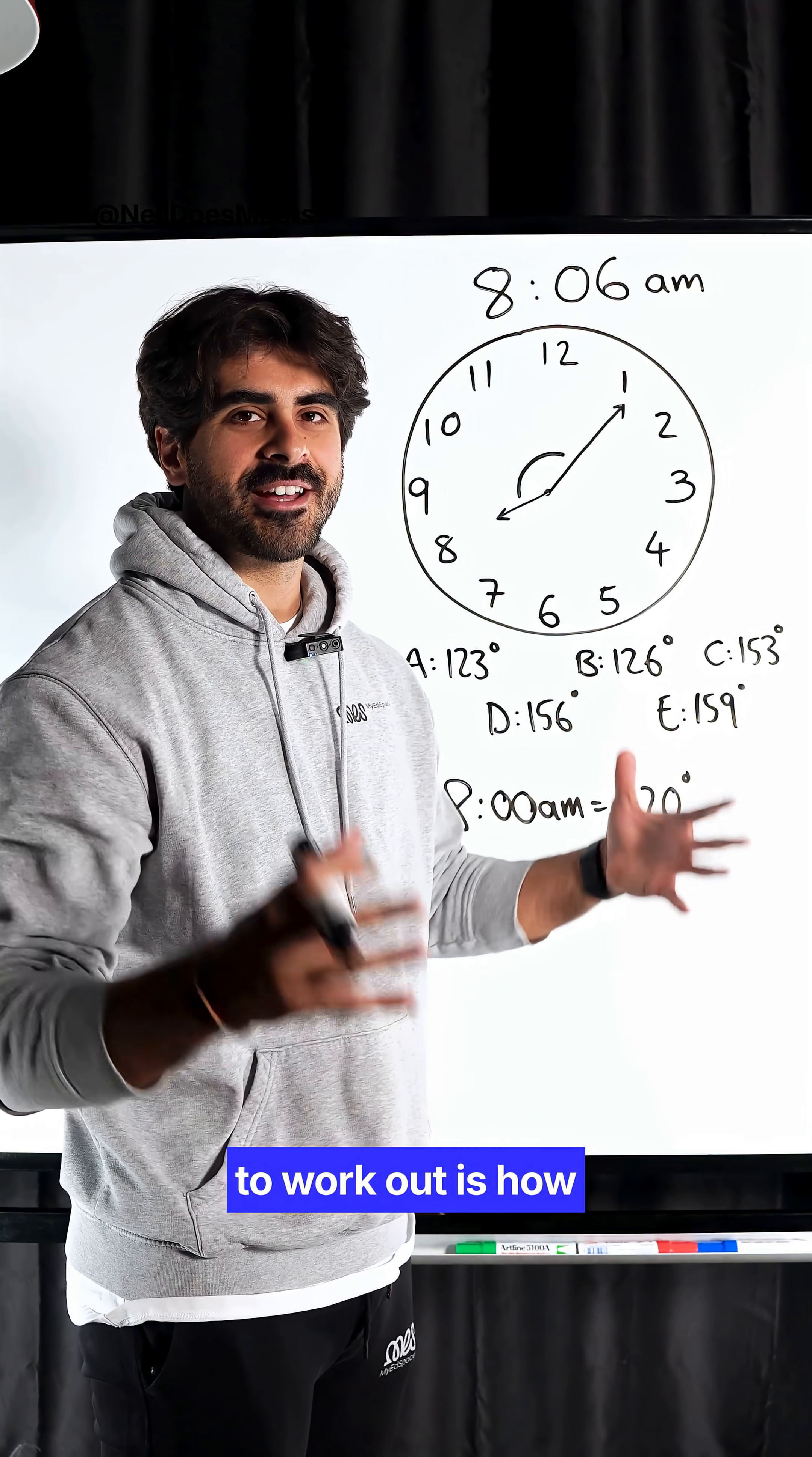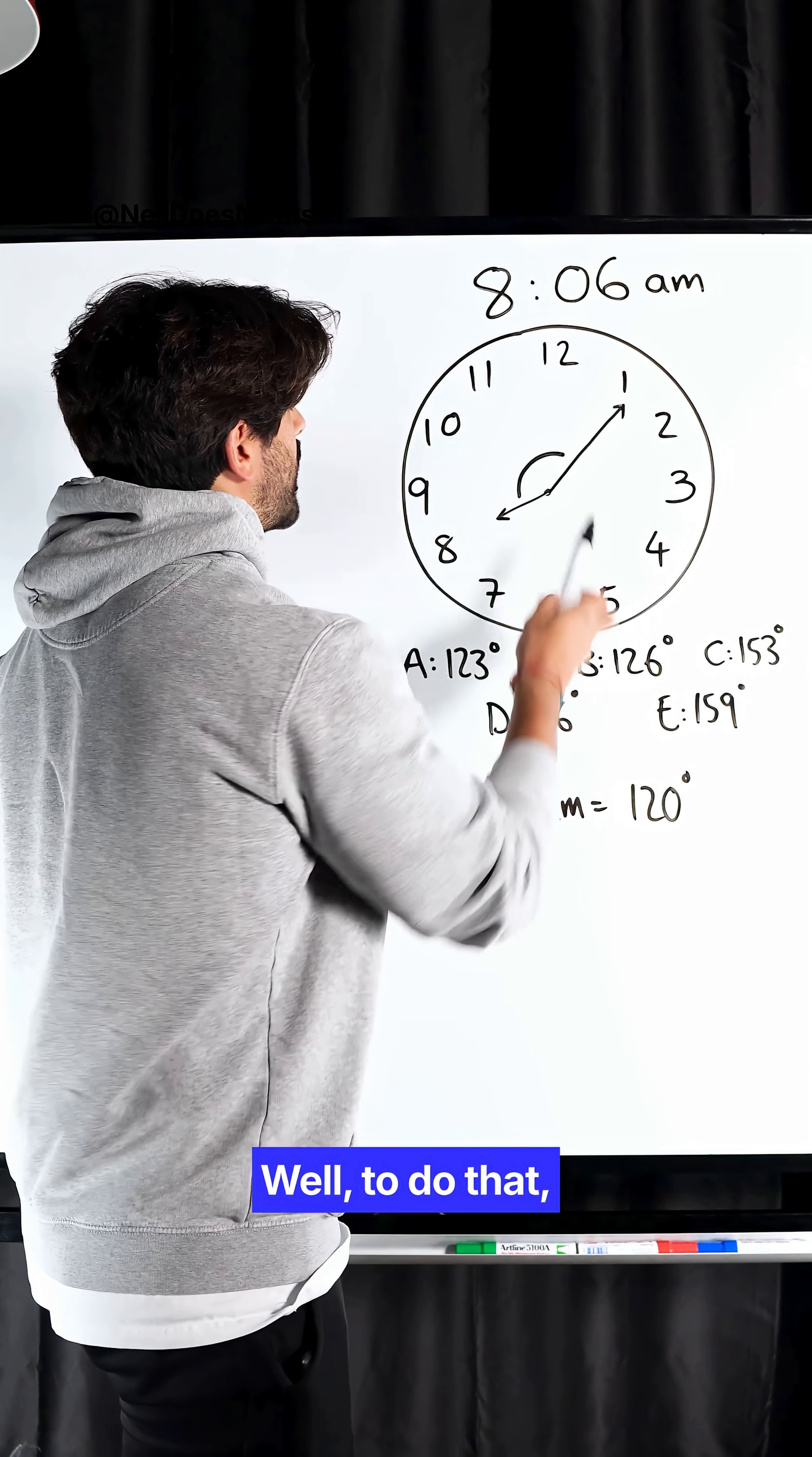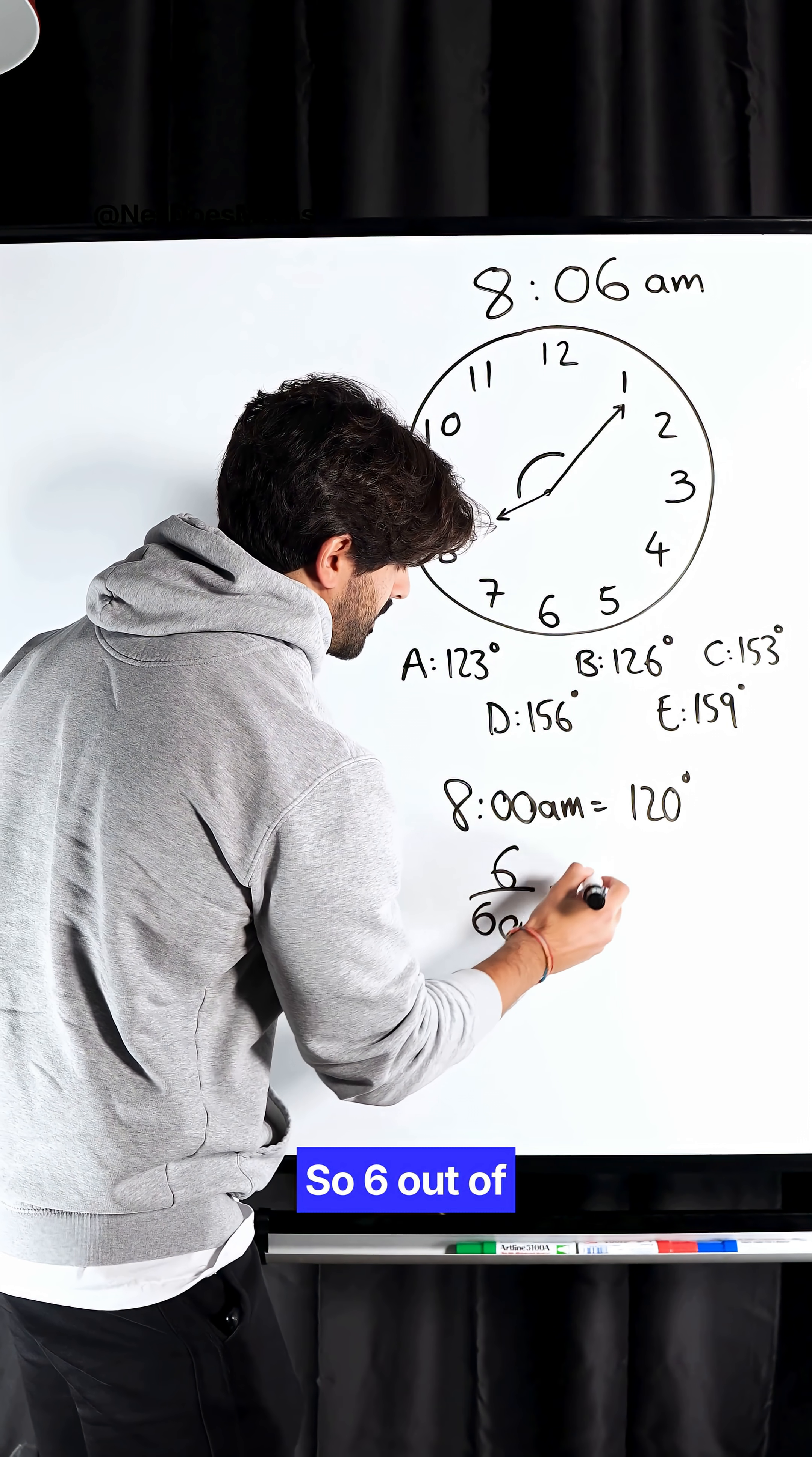The next thing we need to work out is how much the minute hand rotates when it gets to 6 minutes. To do that, we're doing 6 minutes out of a total of 60 minutes. So 6 out of 60 is one-tenth.